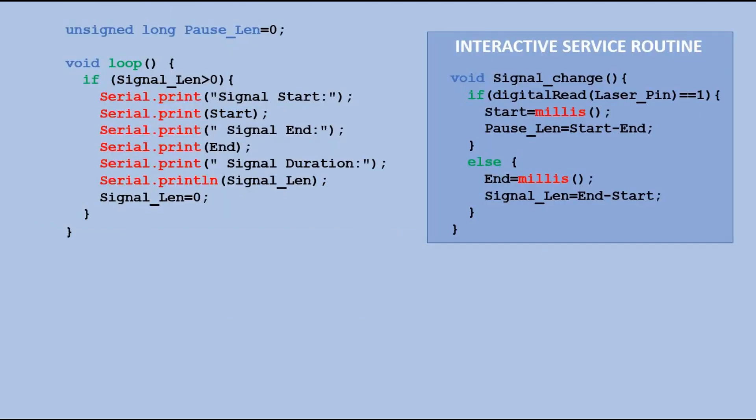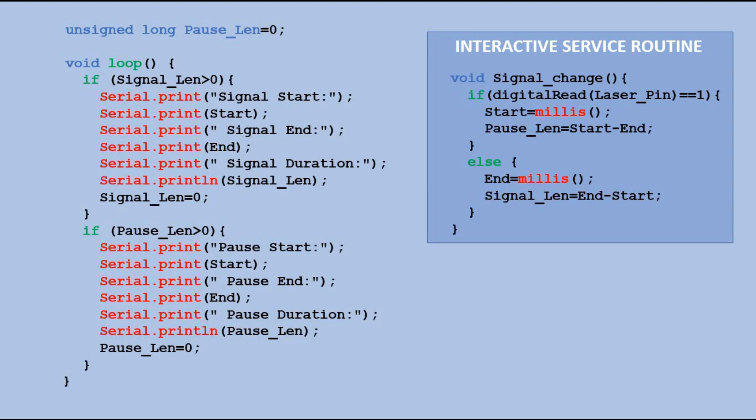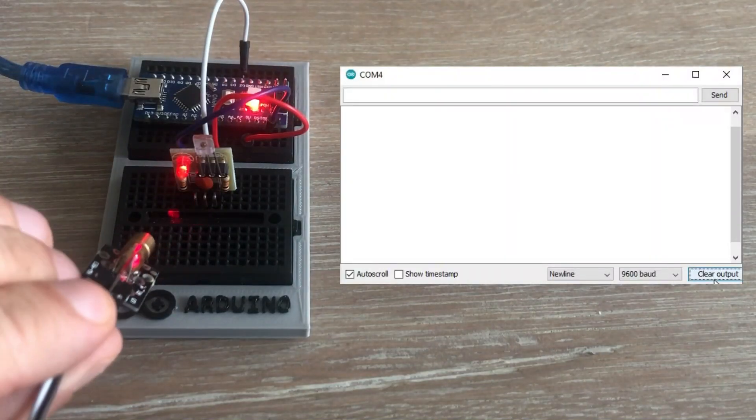In the loop, we need to add similar section for pause len like we did for signal len. So whenever pause len is greater than zero, we are outputting pause information to the serial monitor. And at the end, we reset pause len back to zero. Let's see how this would work.